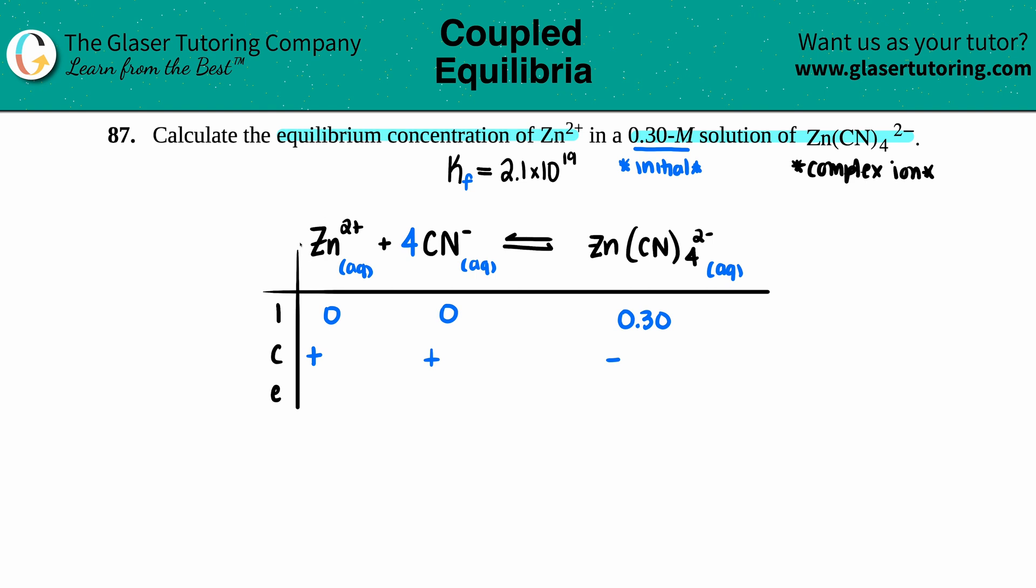There was no coefficient in front of the Zn, so that's plus one x, or just plus x. Here I have a 4 in front, so I have to say plus 4x. There was only one of the complex ion, so minus x. Your equilibrium is bringing your initials and changes together: zero plus x is x, zero plus 4x is 4x, and 0.30 minus x is 0.30 minus x.